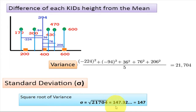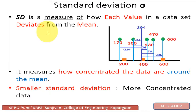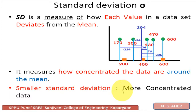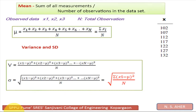Now we calculate standard deviation, which is nothing but the square root of variance, so it equals √21704 = 147.32, approximately 147. So this is called standard deviation. Standard deviation is a measure of how each value in the data set deviates from the mean. It measures how concentrated the data are around the mean. A smaller standard deviation means the data are more concentrated.